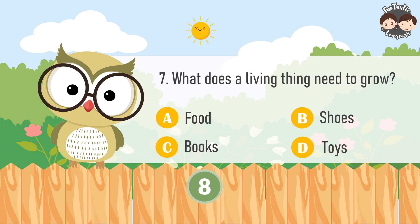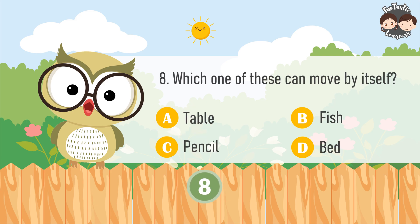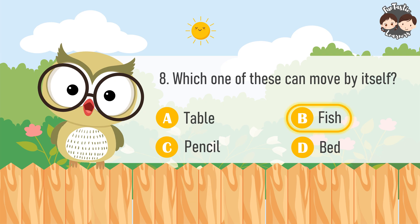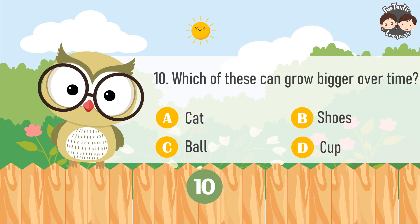What does a living thing need to grow? Food. Which one of these can move by itself? Fish. Which of these is something only living things can do? Breathe. Which of these can grow bigger over time? Cat.